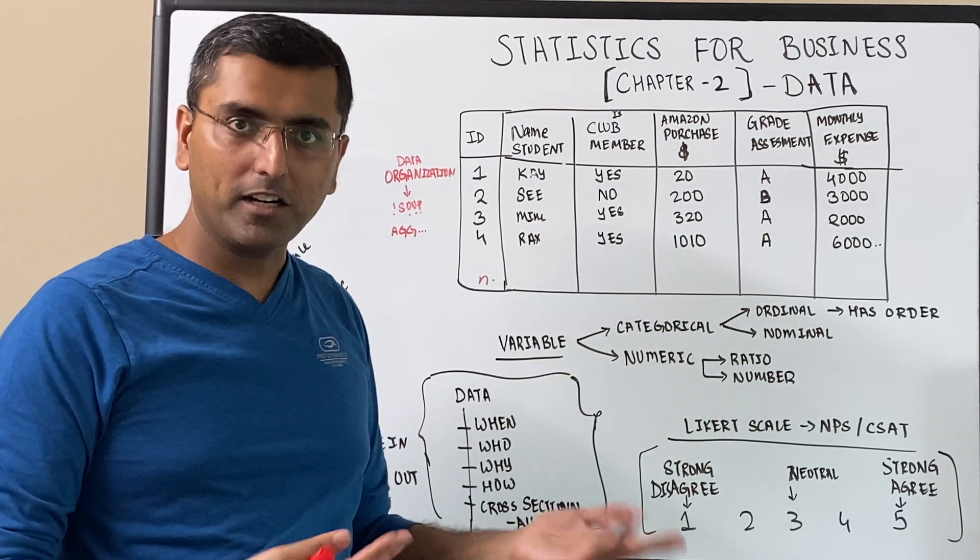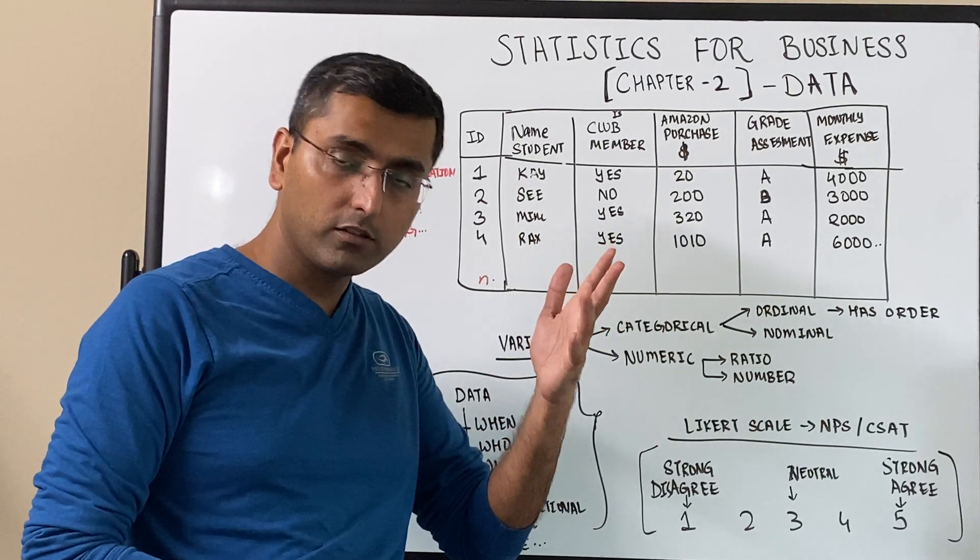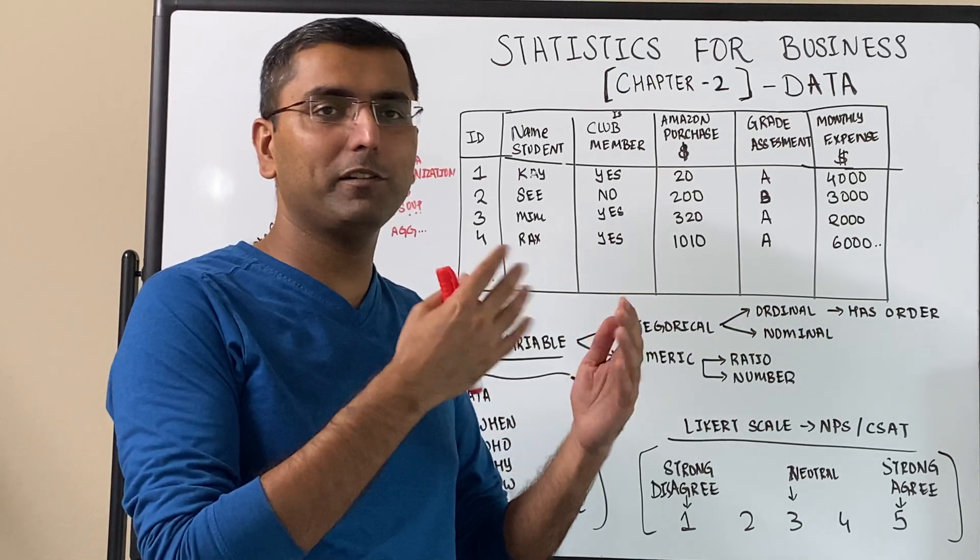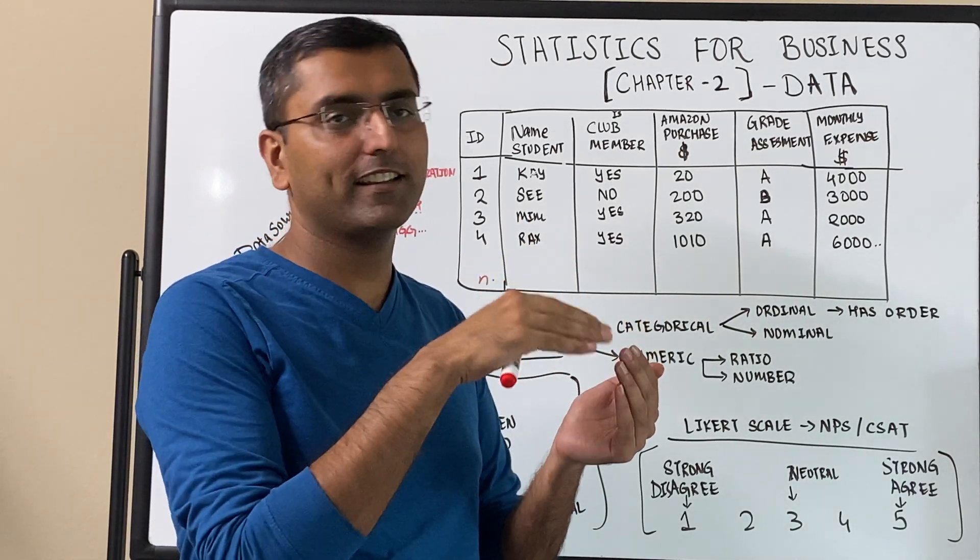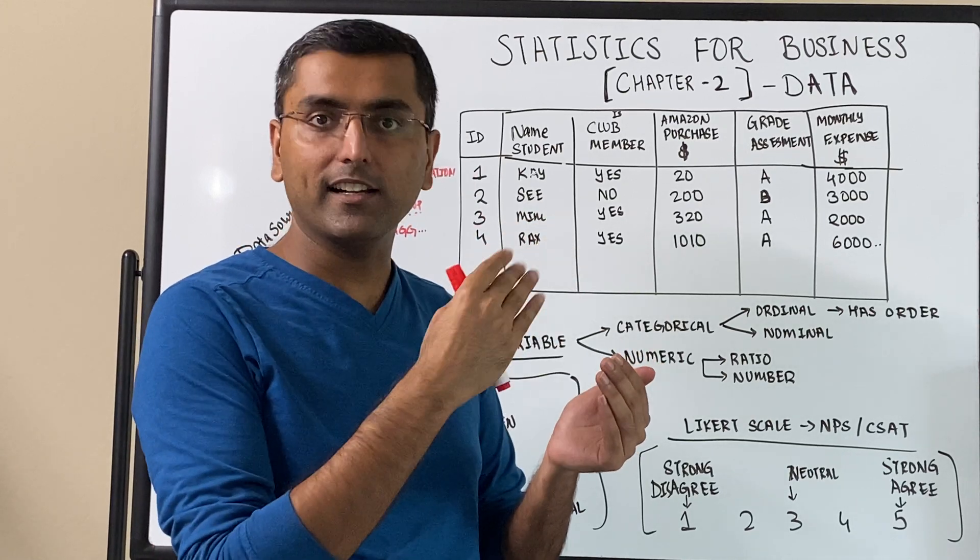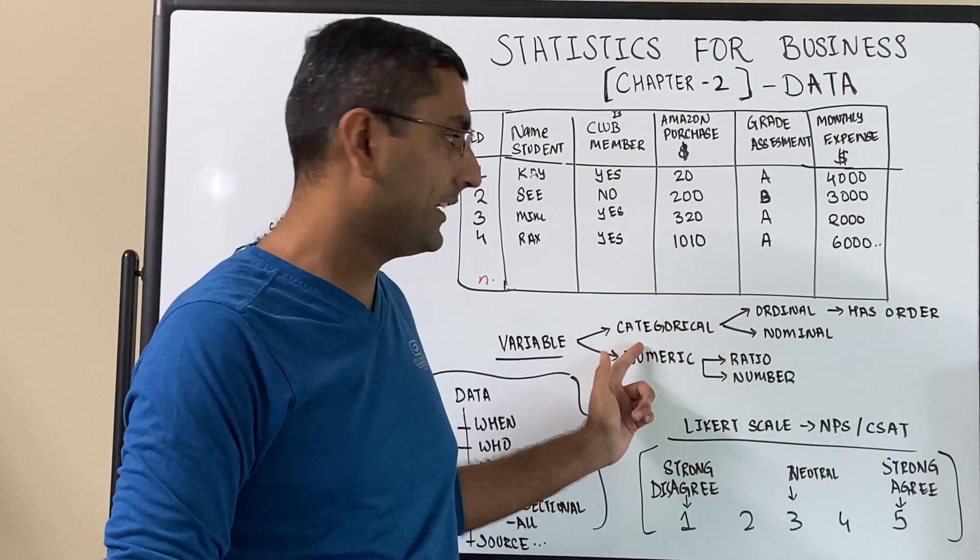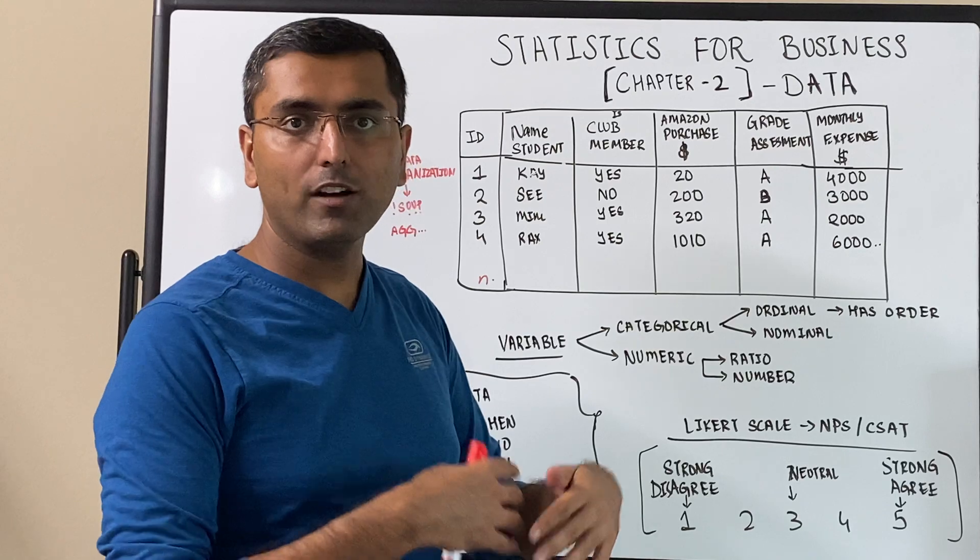Numeric variable could be a ratio or number. Categorical variable could be an ordinal or nominal. Ordinal order, right? So the variables have some sort of an order. You can say, hey, this is greater than this, this is better than this. So categorical variable could have an ordinal categorical variable or a nominal categorical variable. The difference being that ordinal variable has an order.